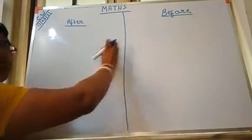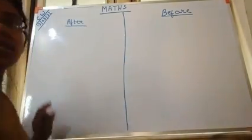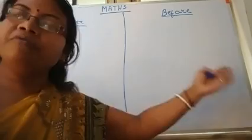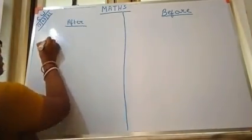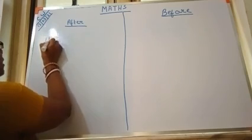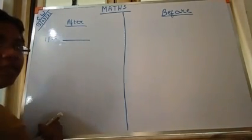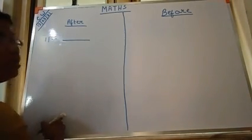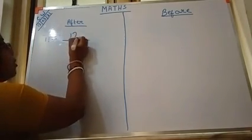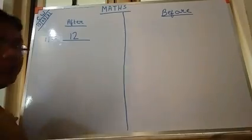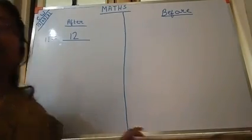After means the next number. Before means the first number. Suppose the number is 11. What is the after number of 11? What is the next number of 11? It is 12. So the after number of 11 will be 12.